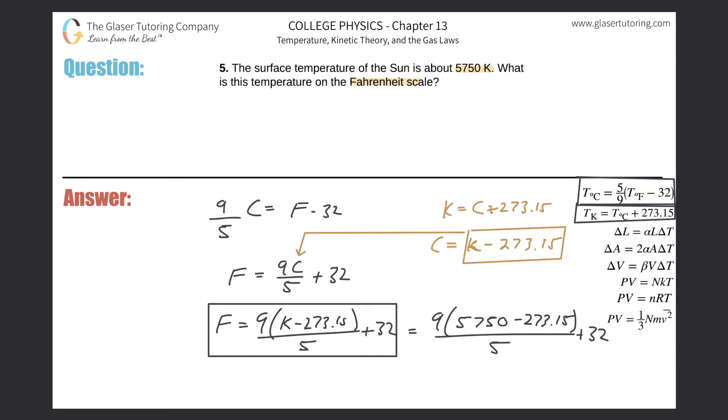Okay, take out the calculator. Nine times 5750 minus 273.15, divide that by five, add your 32 to it. We're going to get a value of about, so the Fahrenheit temperature will be about 9,890.